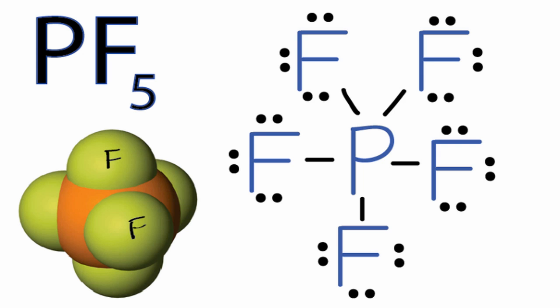If you couldn't visualize that, you can always use the AXN notation to figure out the molecular geometry. A, that's the phosphorus. X, that's the number of atoms bonded to the phosphorus.